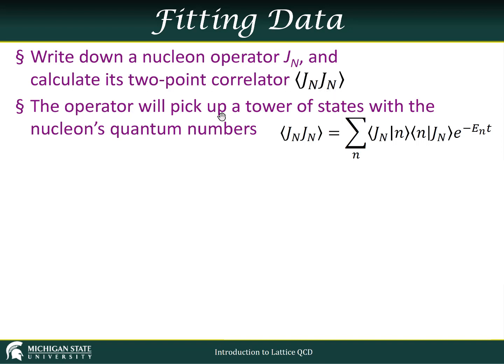The operator will pick up a tower of states with nucleon's quantum numbers. What does that mean? We're trying to get the ground state nucleon, but we don't just get the ground state nucleon. We get anything that has the quantum numbers of the operator that we just put on here. Unless we've somehow magically discovered the exact wave function of the ground state, we'll actually have an overlap with the ground state, excited states, some huge number of different states.